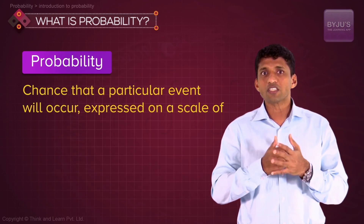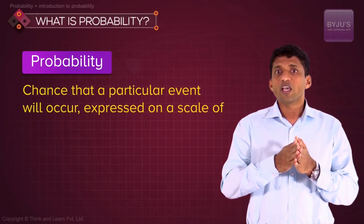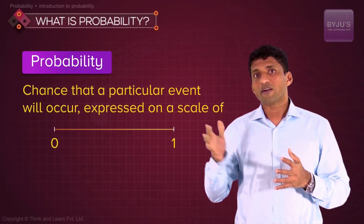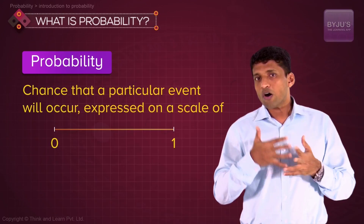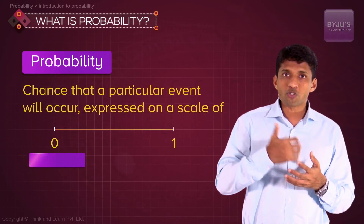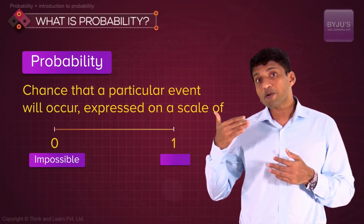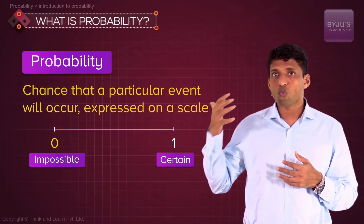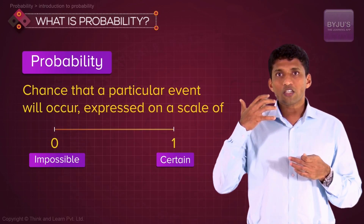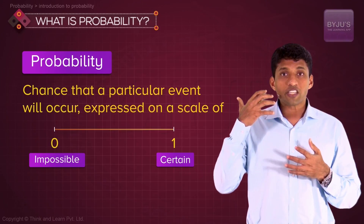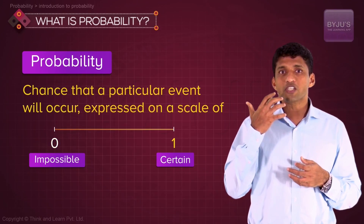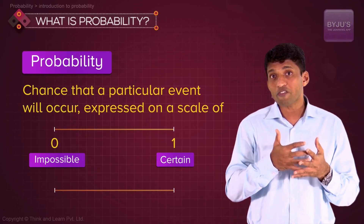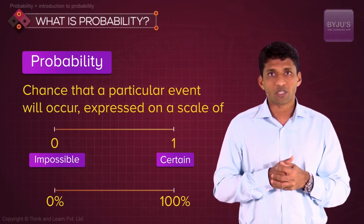Probability is expressed on a scale from 0 to 1. Here, 0 represents impossibility and 1 represents certainty — when you are sure about something, we use 1; when it's impossible, we use 0. It can also be expressed as a percentage between 0 and 100 percent.